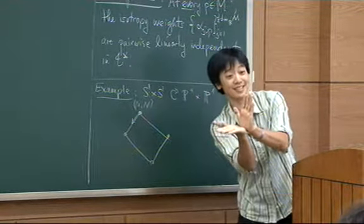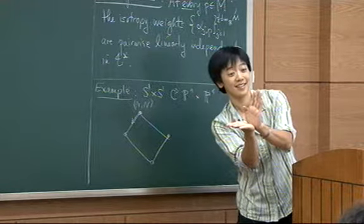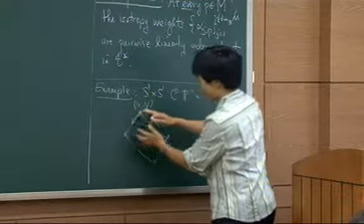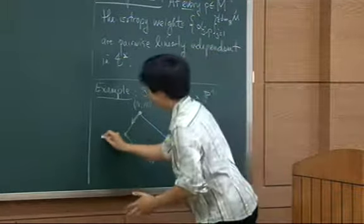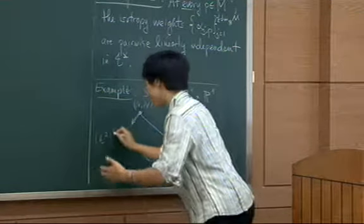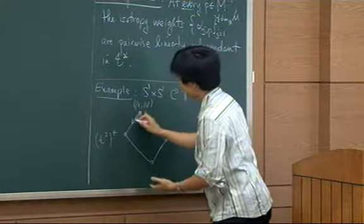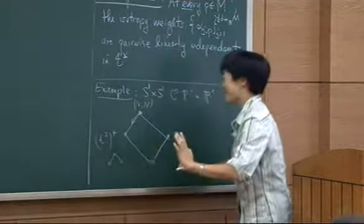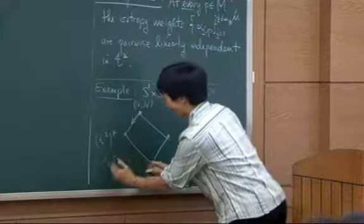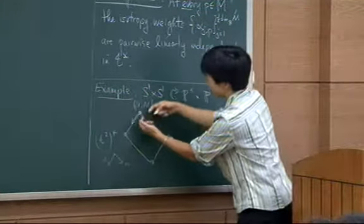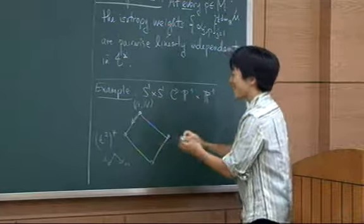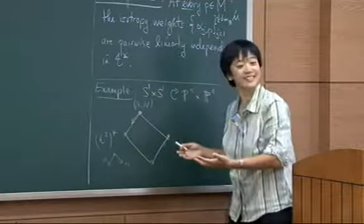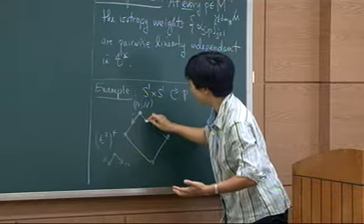This corresponds in the picture to the moment map image: I think of this picture as living in T2-star, and I'm going along one coordinate direction being U1 and the other being U2. The picture is drawn precisely so that the edges go exactly in the direction of the weights — this edge is U1 and this edge is U2.